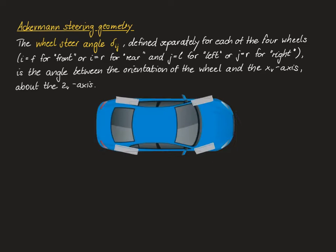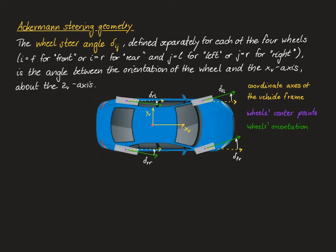To illustrate this, suppose this is our vehicle with the four wheels in light gray. In red we have our vehicle reference point, and in yellow we have the coordinate axes of the vehicle frame, xv and yv. In purple we see the wheel center points and in green the wheels' orientation, and finally in white we see the wheel steer angles of the front left wheel, the front right wheel, the rear right wheel, and the rear left wheel.